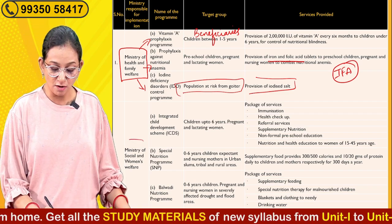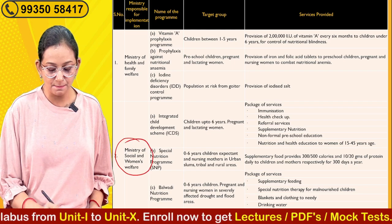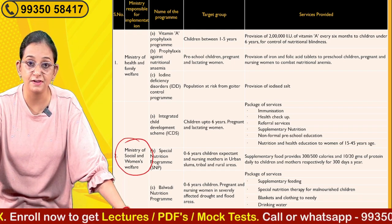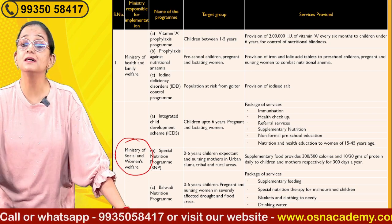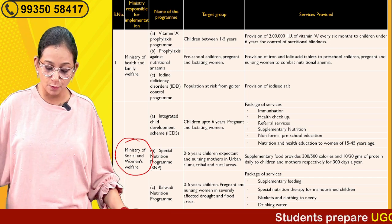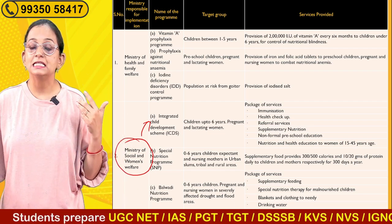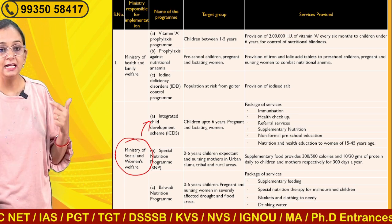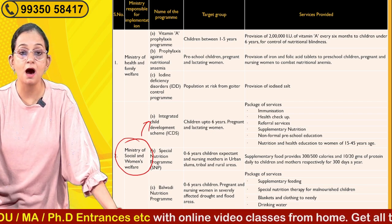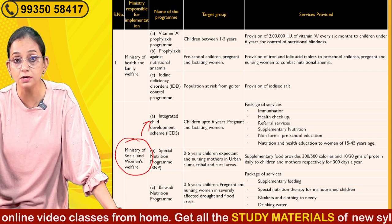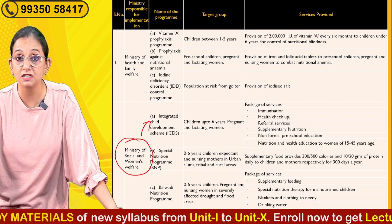The second ministry is the Ministry of Social and Women's Welfare, which focuses on children and females such as pregnant and nursing women. The first program under this ministry is the ICDS — Integrated Child Development Scheme. The beneficiaries are children up to six years old, pregnant females, and nursing women.